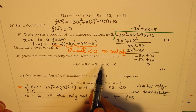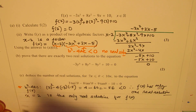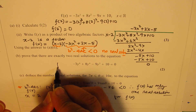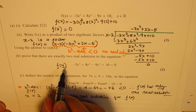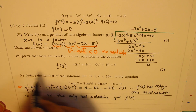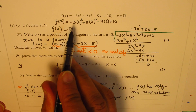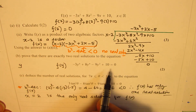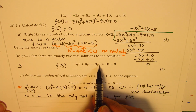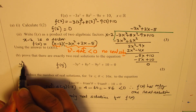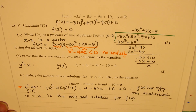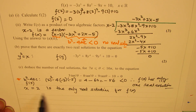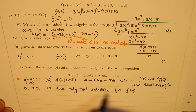Now, what we have here is f of y. In this case, x has been replaced by y squared. So y squared is basically x. We know that x equals 2 is the only real solution for f of x. So for f of y, we need to find what y squared equals.